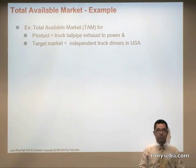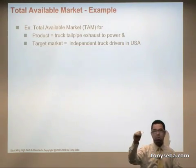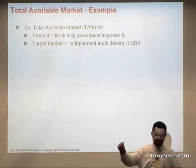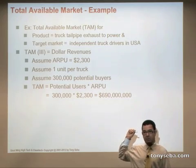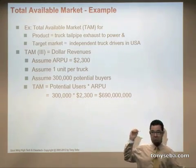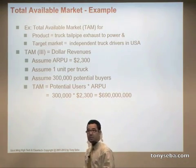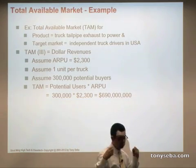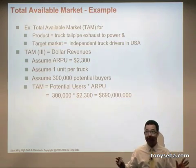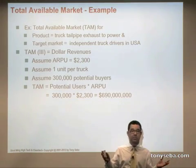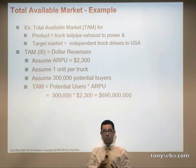Let's put it all together. The product is the tailpipe exhaust-to-power device going into trucks. The target market is independent truck drivers in America. The ARPU is $2,300 and there are 300,000 potential users. Multiply those numbers: 300,000 times $2,300 equals a $690 million potential market. Notice that this market does not currently exist — it may be an emerging or non-existent market — but this is the correct way to size a market using Total Available Market.